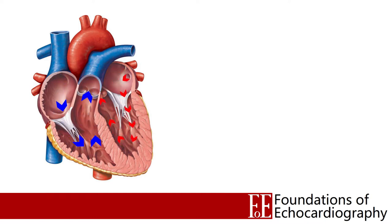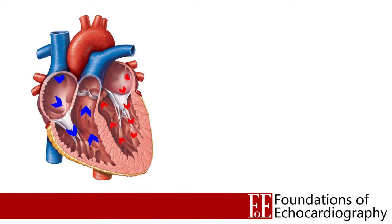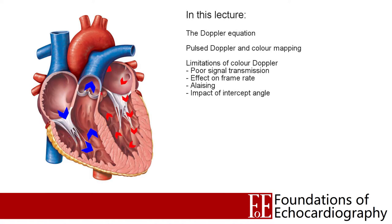Just as it isn't essential to understand the basic physics of ultrasound in order to produce 2D images, it is possible to use Color Doppler without having a full understanding of how these images are generated. However, just as with 2D imaging, there are some important limitations of using Color Doppler, and we can only really understand these limitations if we understand how the images were produced in the first place. So over the course of this lecture I'm going to explain how we generate color maps and some of the problems we might encounter when using them.